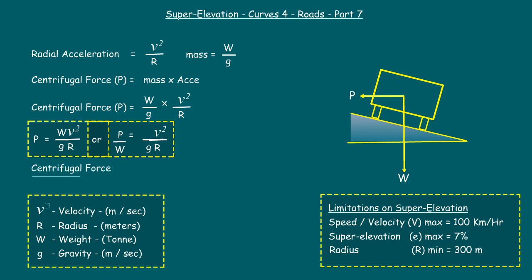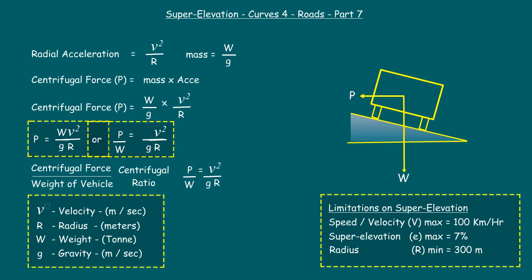The ratio between the centrifugal force and the weight of the vehicle is known as the centrifugal ratio. That is, P/W equals v²/gr. For highways, the ideal centrifugal ratio is considered as 1/4. And for railways, it is 1/8.